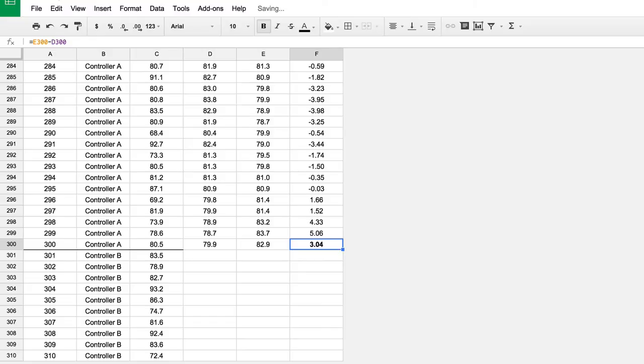So our question then becomes, how likely are we to see a value of 3.04 or greater in all these rows above? That number is going to be our risk, the risk that we are wrong in recommending the new controller.